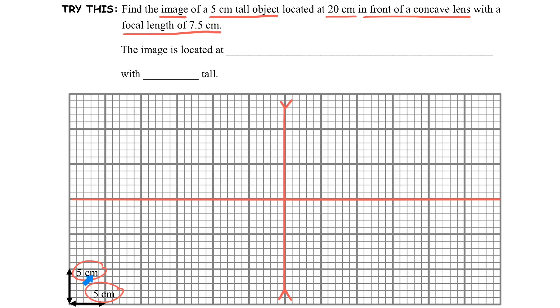The question state that we have a 5 cm tall object and 20 cm in front of the concave lens. Usually we will use an arrow to represent the object.